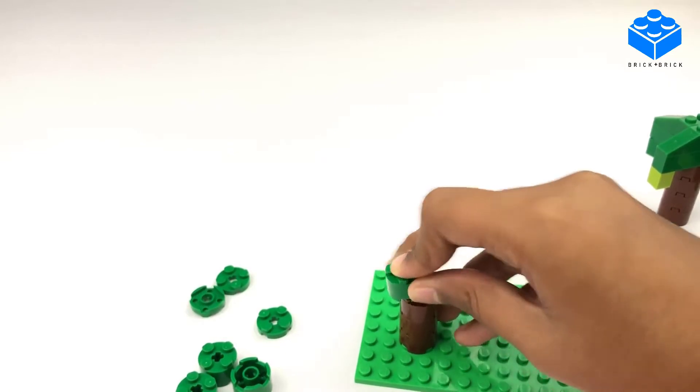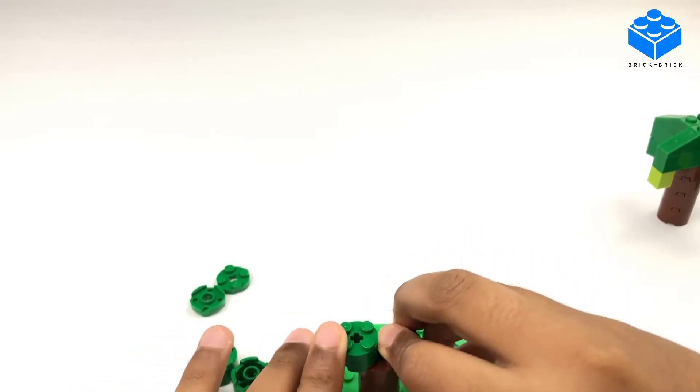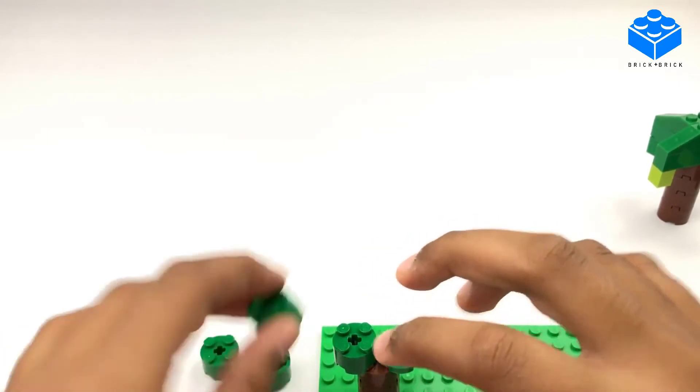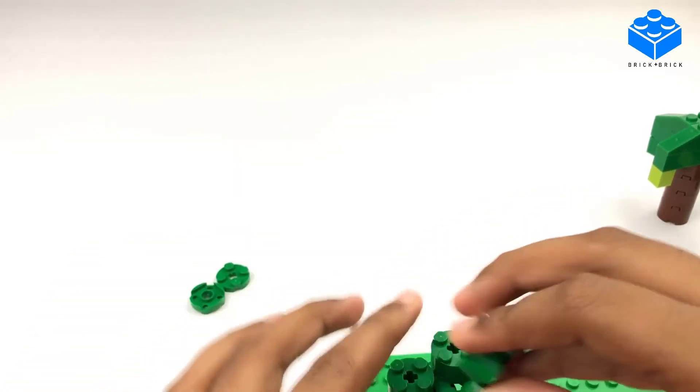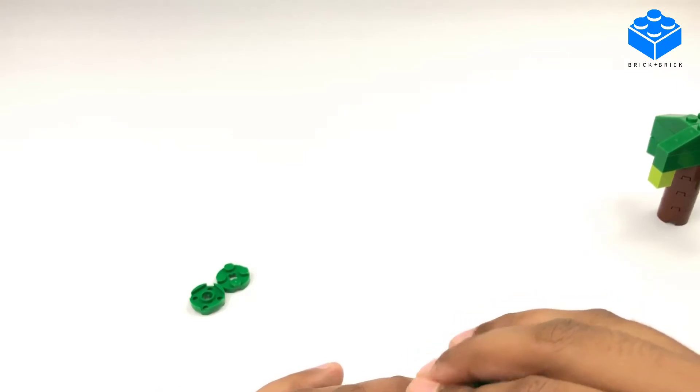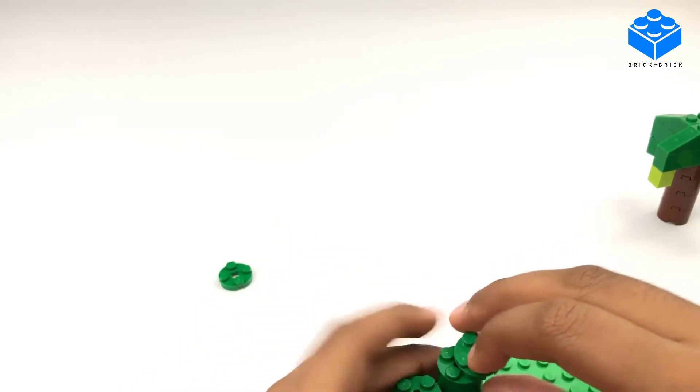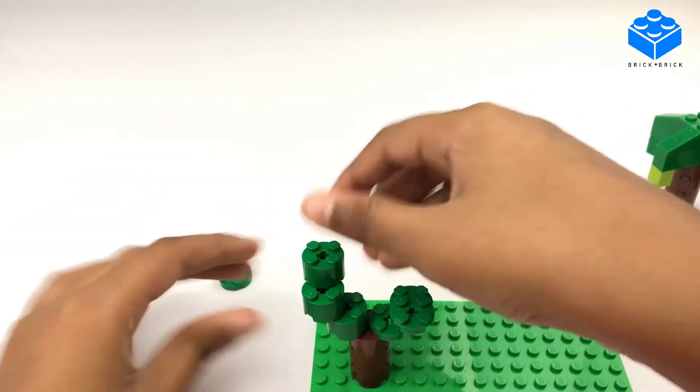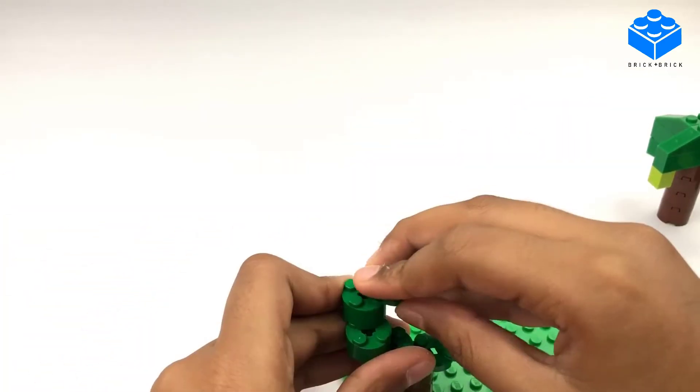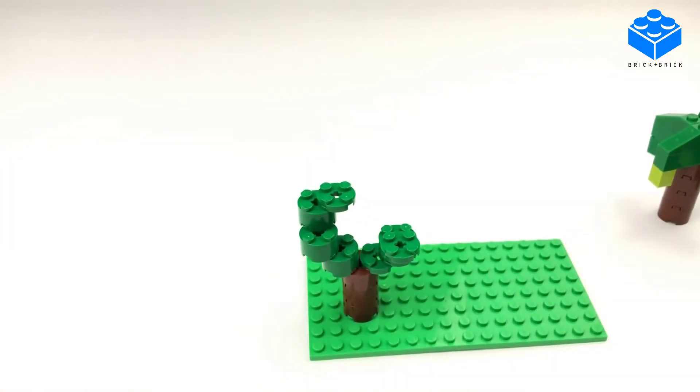Next, we can randomly arrange our green pieces in whatever order we'd like. So from here, you don't really need to follow the instructions. And that's it! That's how you make our first tree that we're gonna make today.